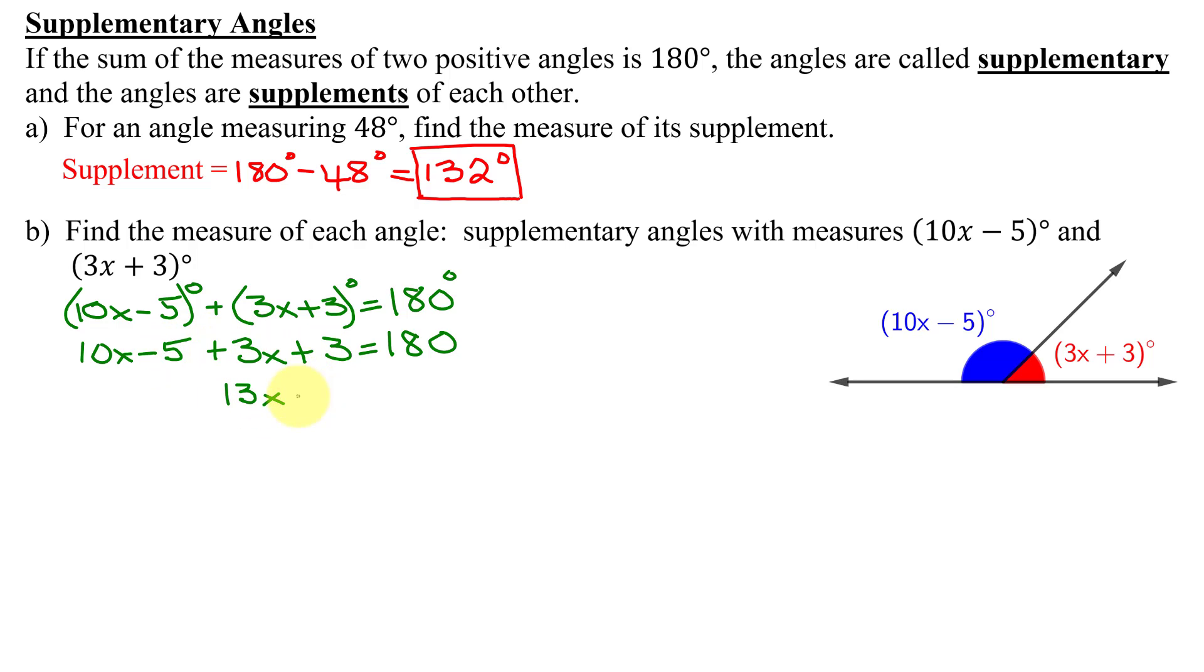Now to get 13x by itself on the left-hand side, add 2 to both sides. I get 13x = 180 + 2 = 182. Finally, divide both sides by 13. And x = 182 ÷ 13 = 14.